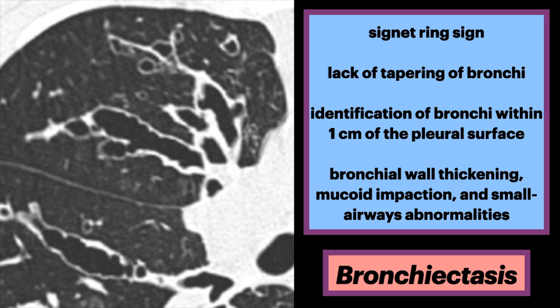Morphologic criteria on CT include bronchial dilation with respect to the accompanying pulmonary artery — this is called the signet ring sign. We also see lack of tapering of the bronchi, and identification of the bronchi within one centimeter of the pleural surface. Other associated features include bronchial wall thickening, mucoid impaction, and small airways abnormalities.